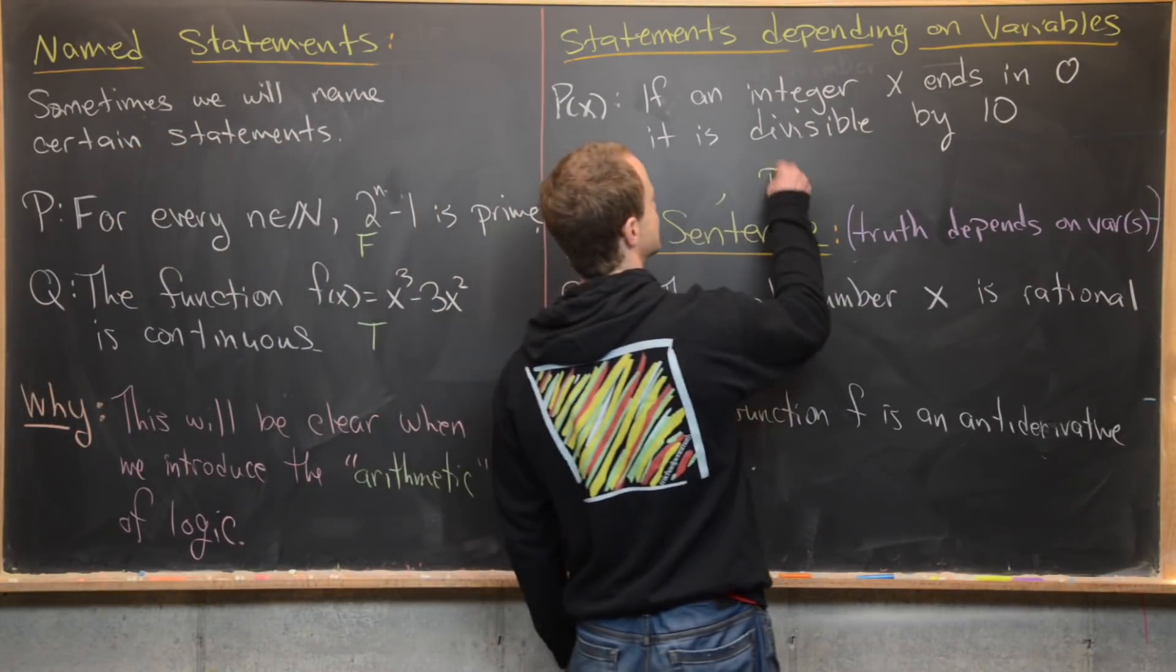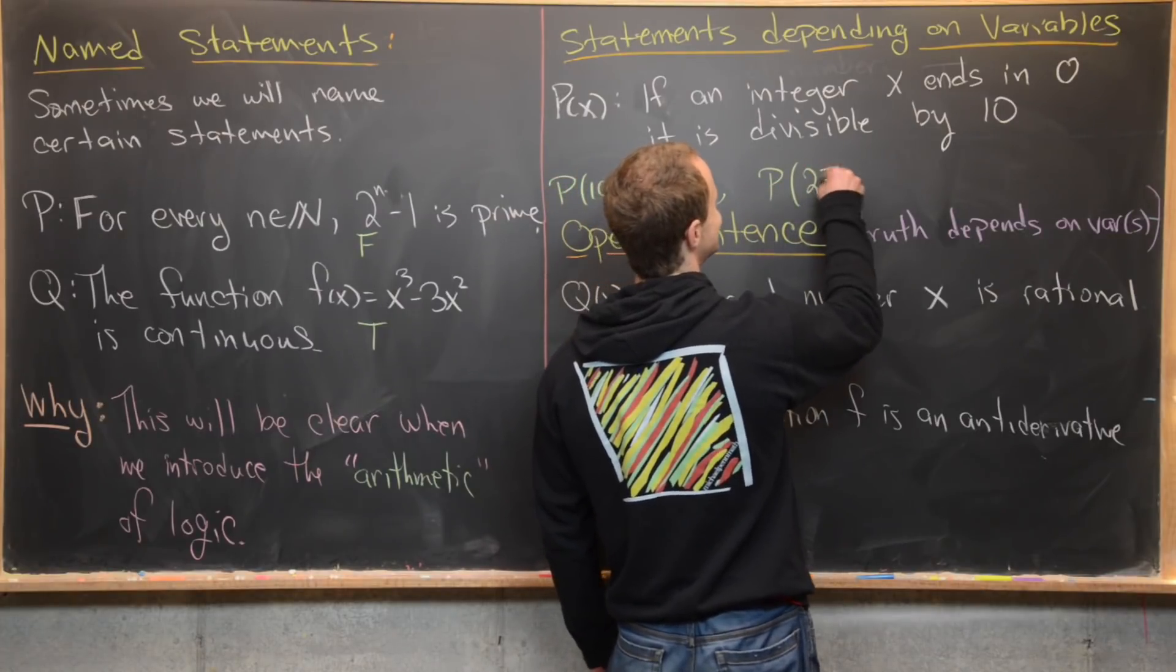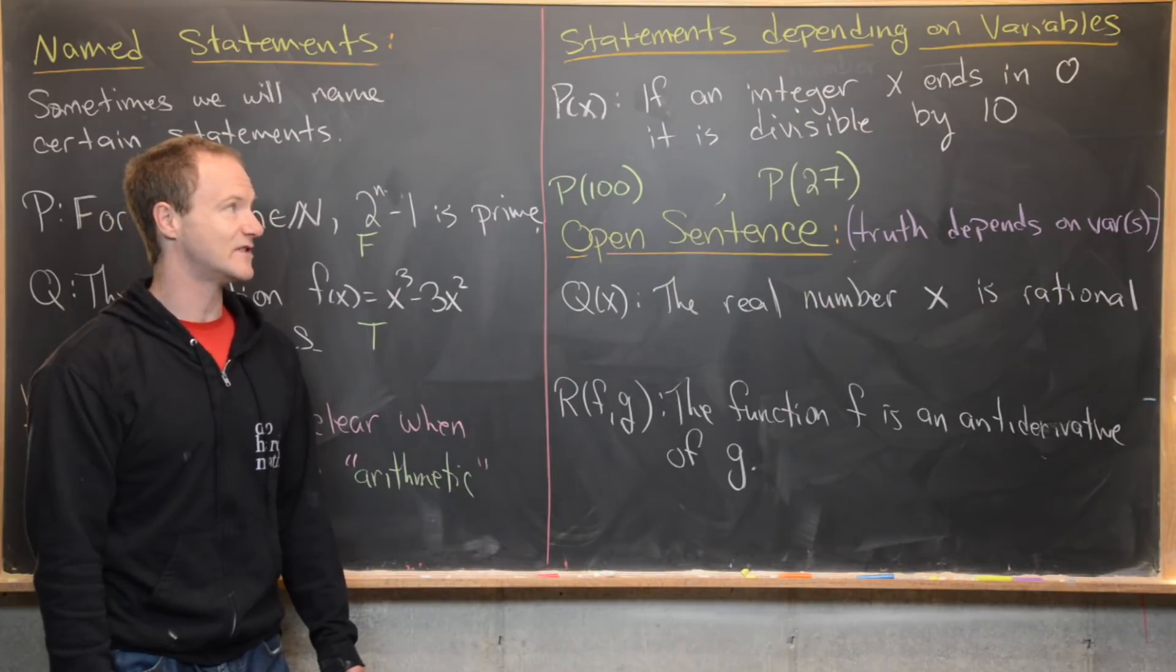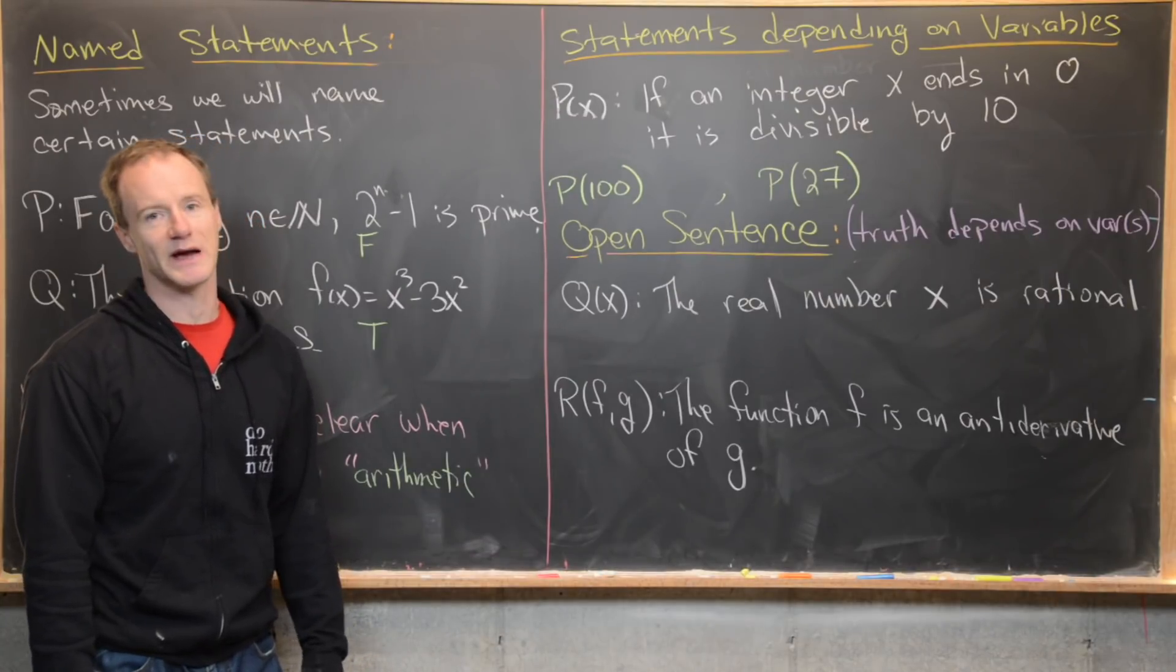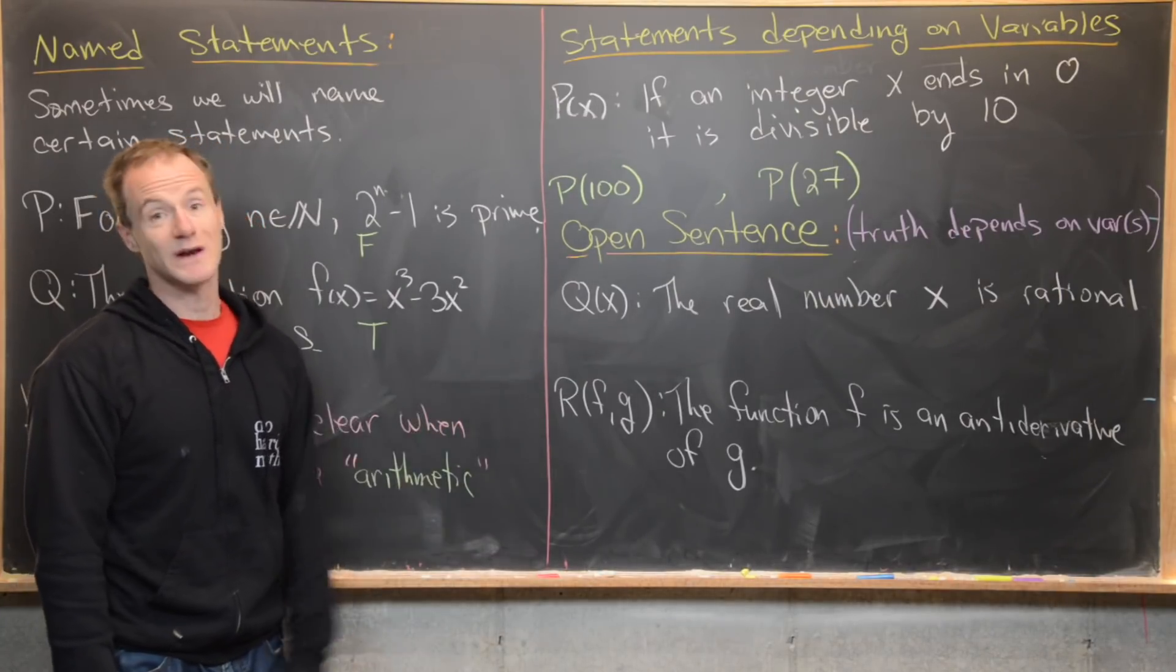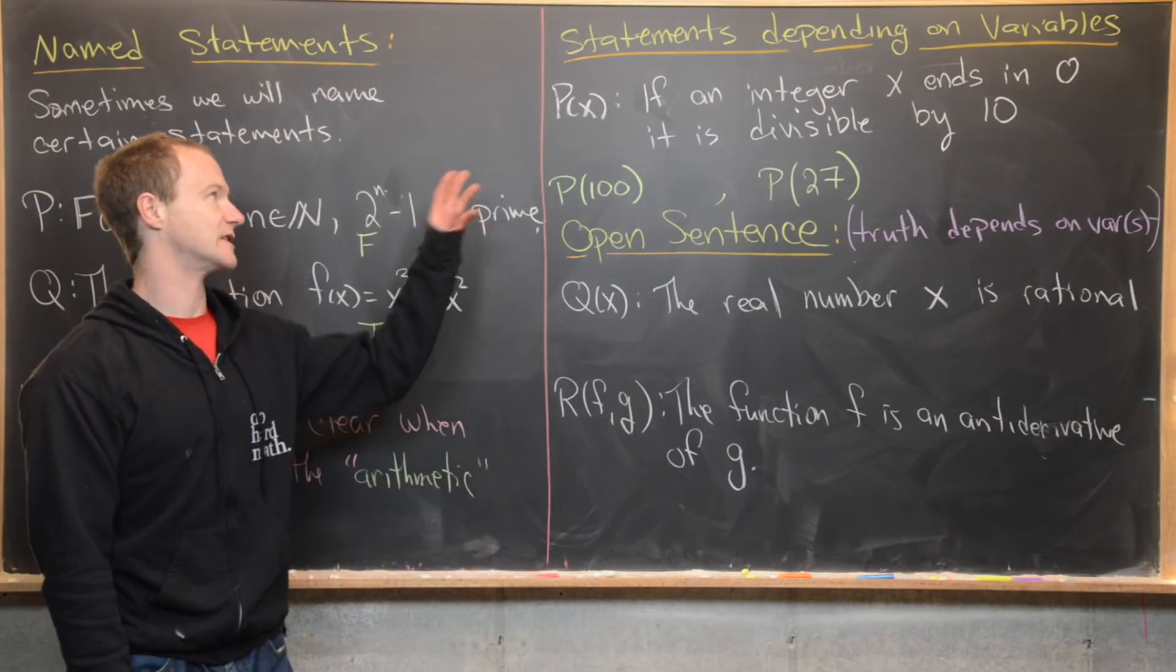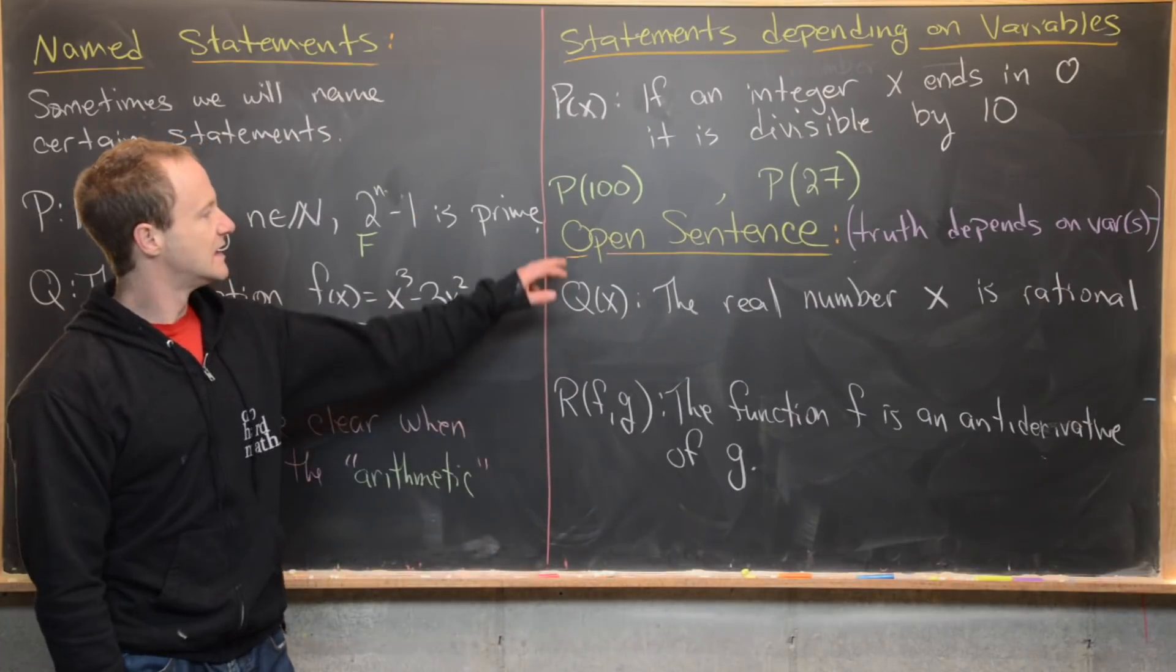If we look at the statement P of 27, it says if the integer 27 ends in zero, then it is divisible by 10. Well, 27 does not end in zero, so it doesn't have to be divisible by 10 for this to be true.